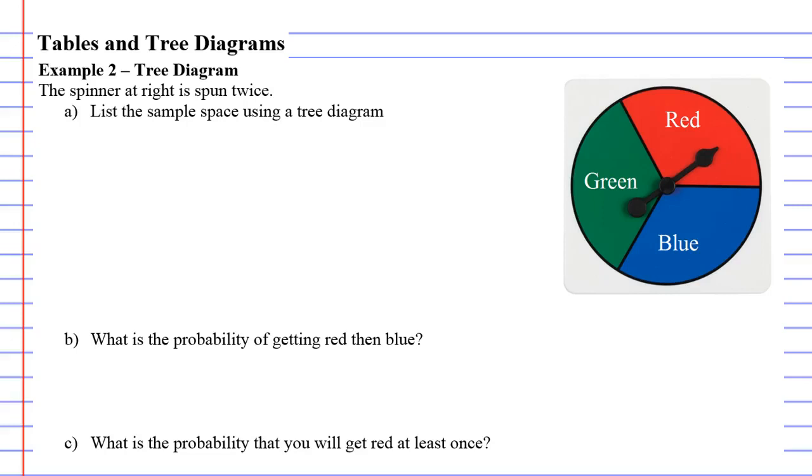Tables and tree diagrams, example 2. This one's going to be using a tree diagram. The spinner at right is spun twice and wants you to list the sample space using a tree diagram.